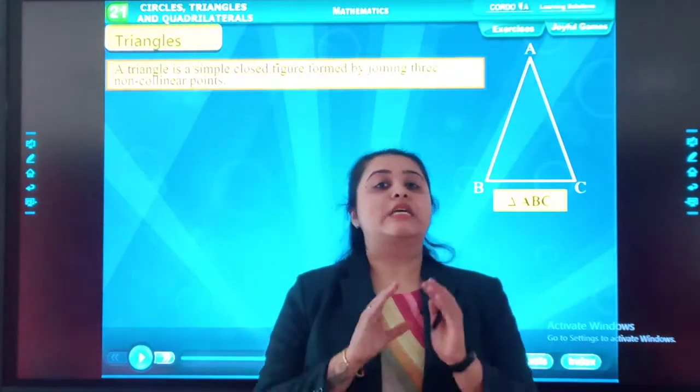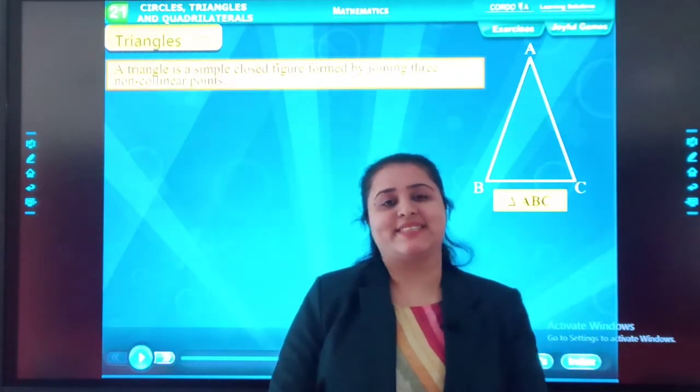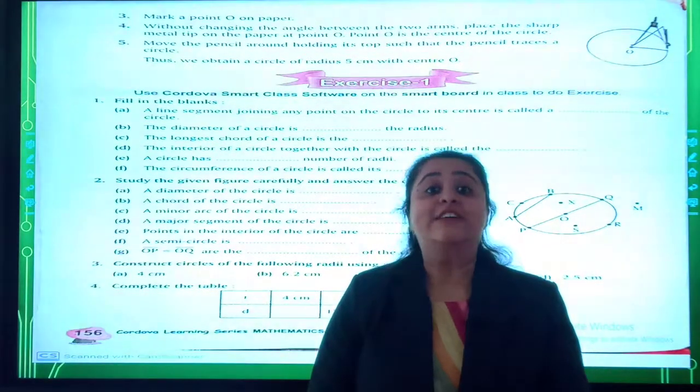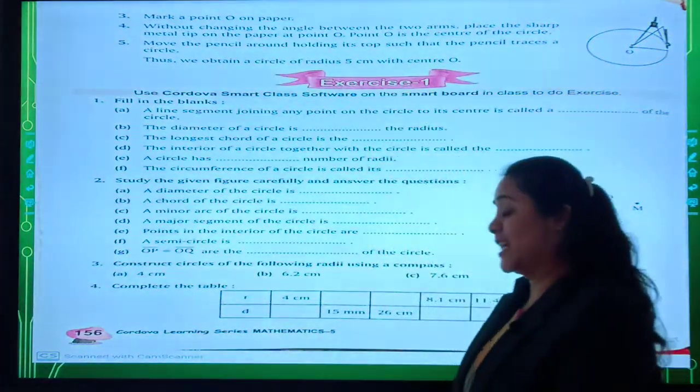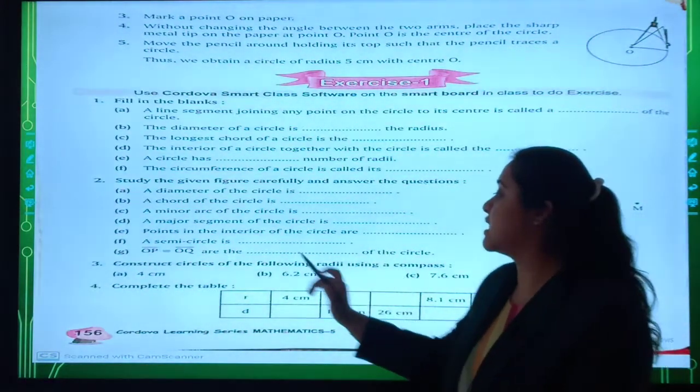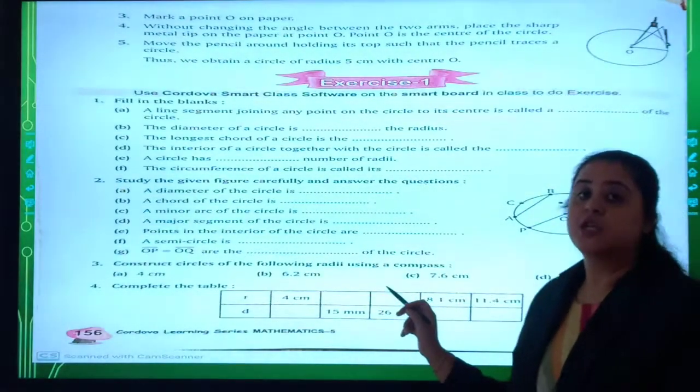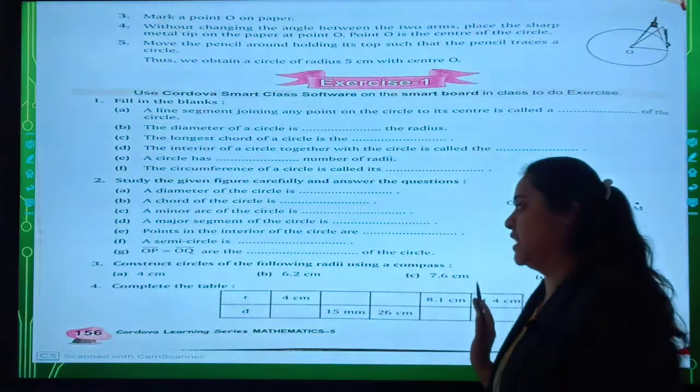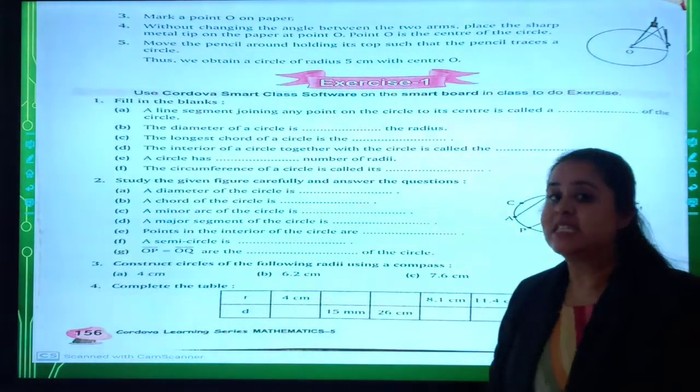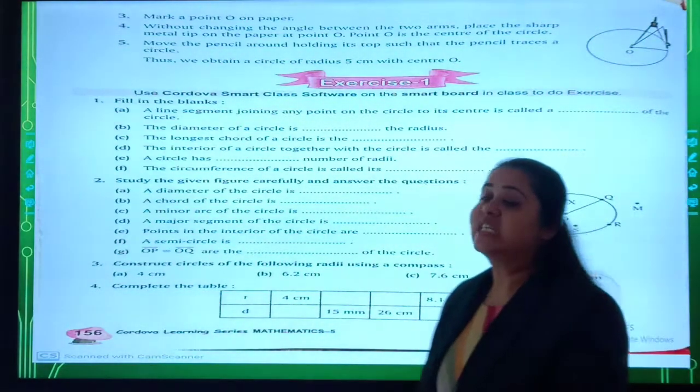So students, now you learnt how to draw a circle with a given radius. Your question number 3 is construct circle of the following radius using a compass. So you have to draw the circle with the given radius. So this will be your homework. Let's discuss question number 1 of exercise number 1. Fill in the blanks.